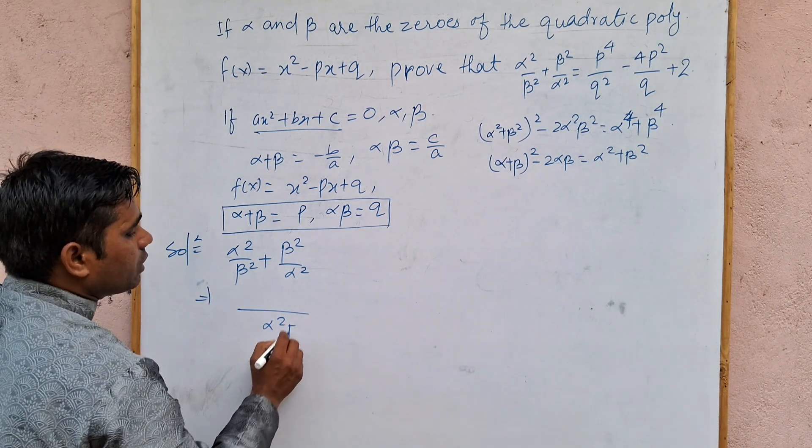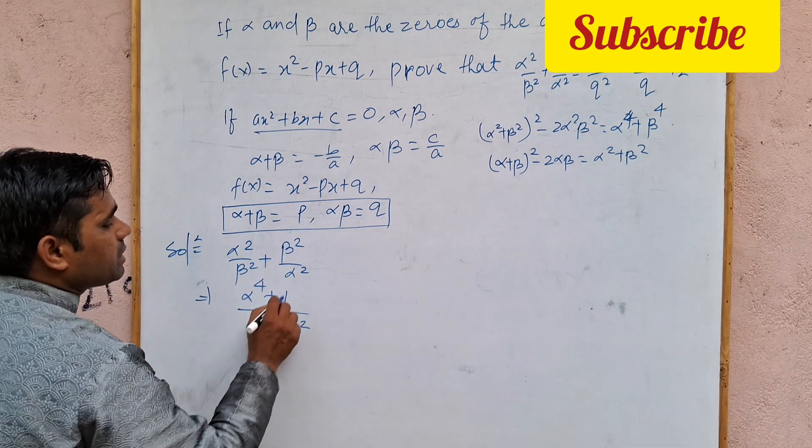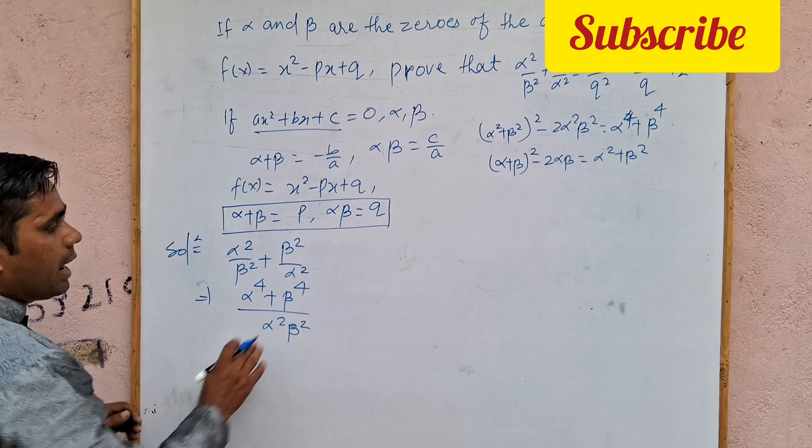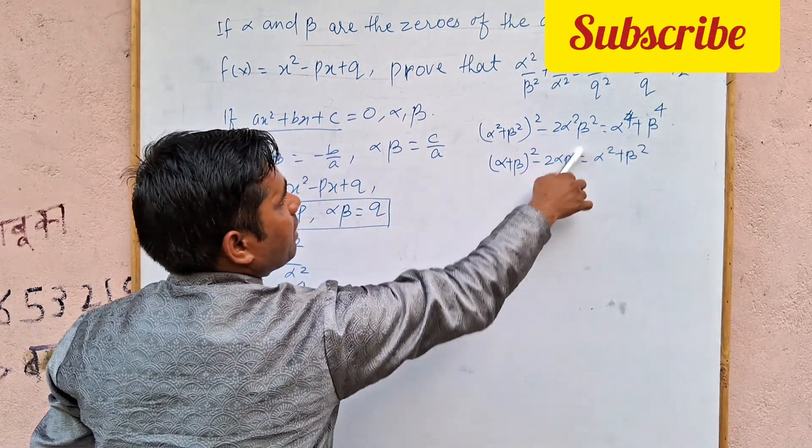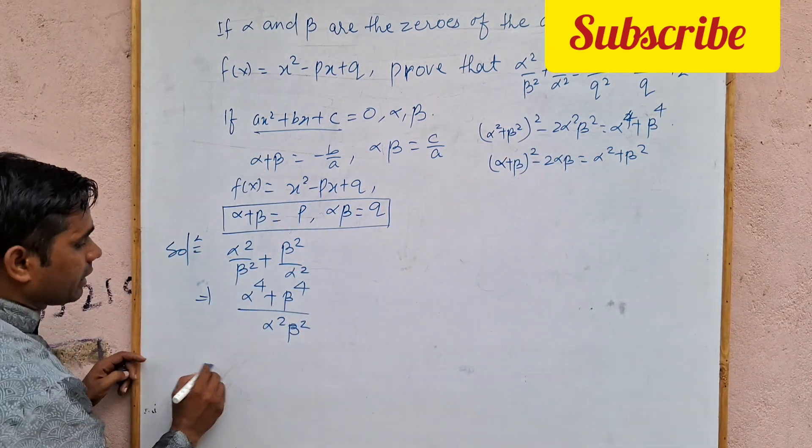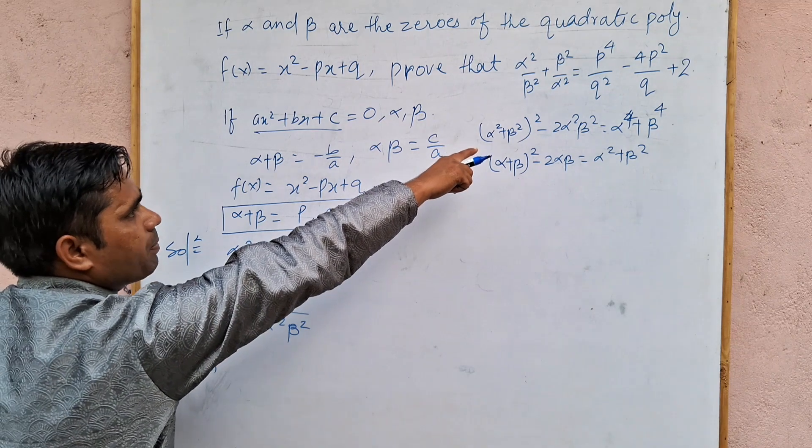Alpha square into beta square. Alpha multiply, alpha power 4 plus beta power 4. What do we apply to this one? Alpha power 4 plus beta power 4 is equal to identity apply to this one. How do you understand? I will break it.